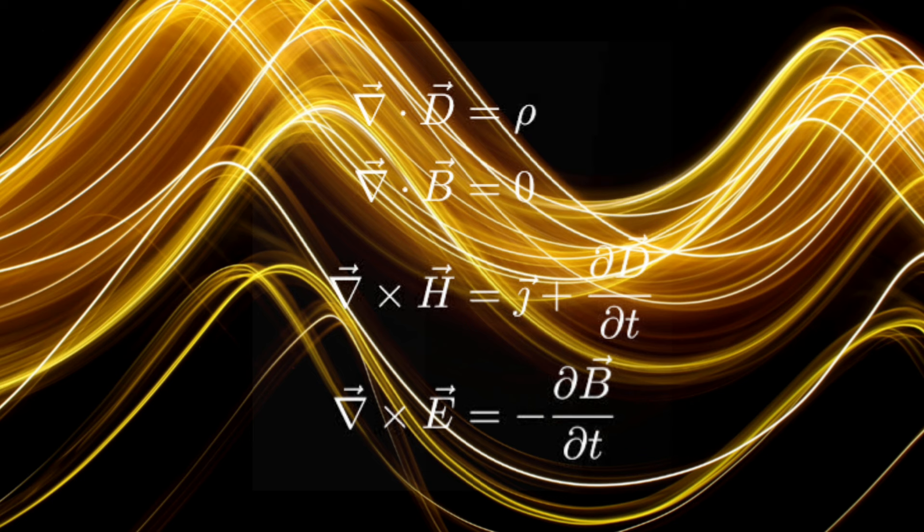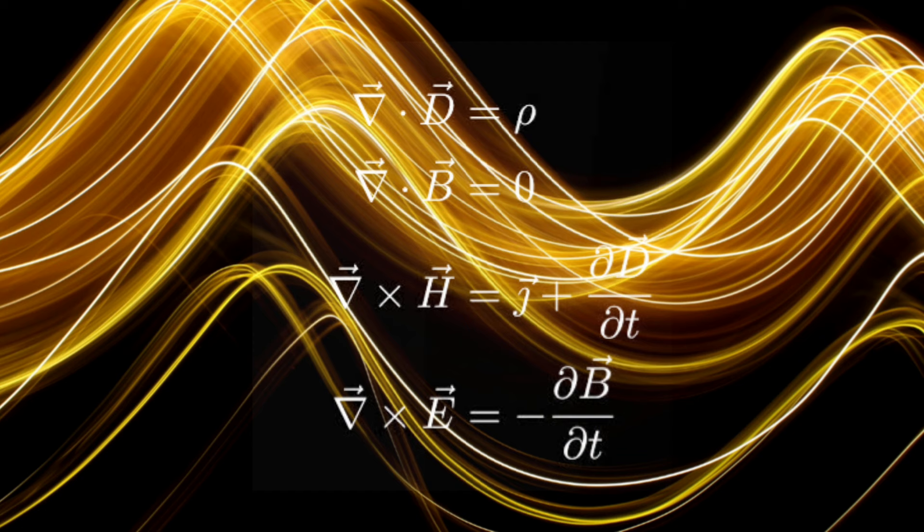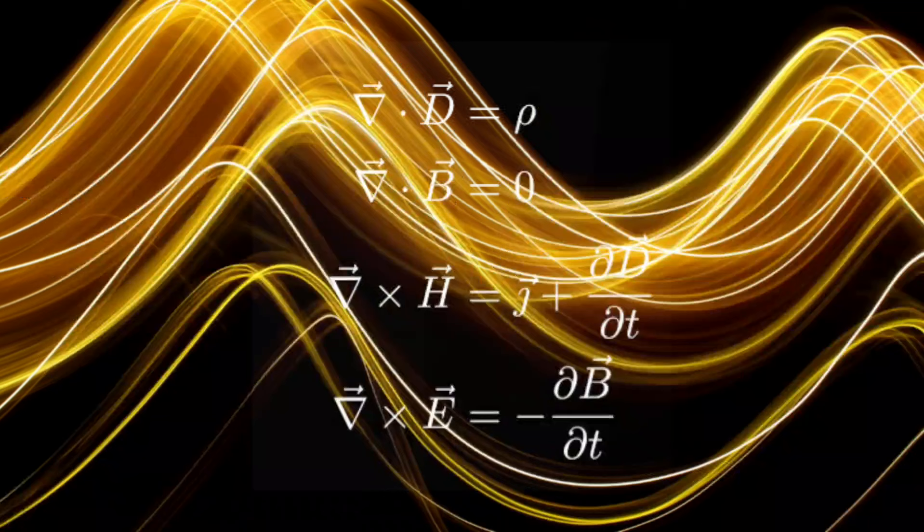1. Birth and early life. James Clerk Maxwell was born on June 13, 1831, in Edinburgh, Scotland. He was the only child of John Clerk Maxwell, an advocate and man of letters, and Francis Kay, an accomplished pianist.